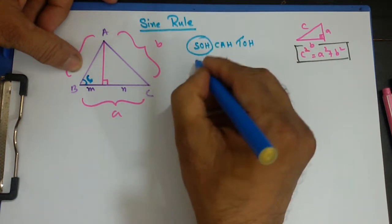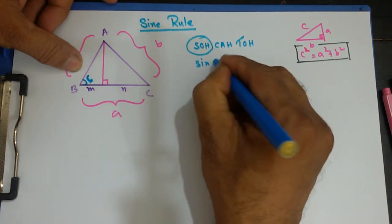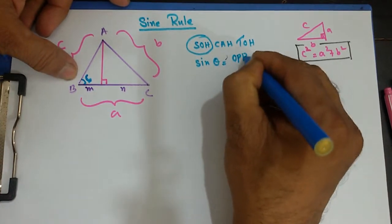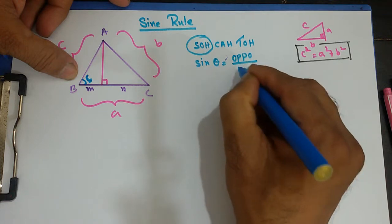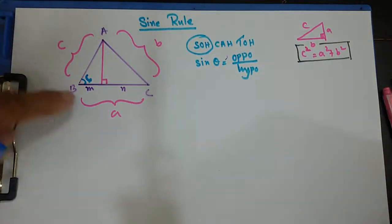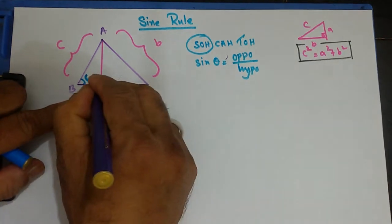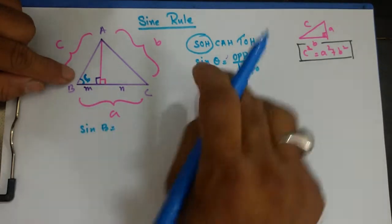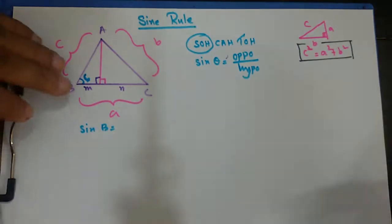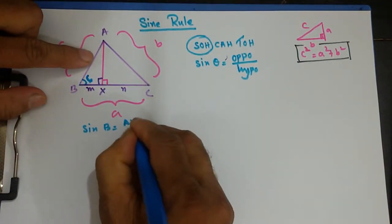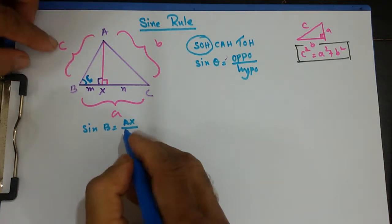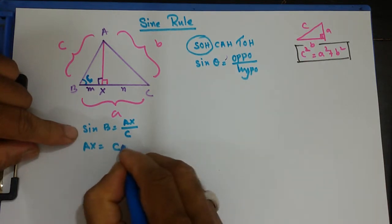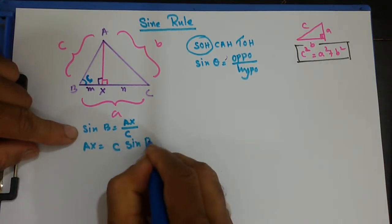I'm going to use SOH here. SOH means sine of any angle — in this case sine B — equals opposite over hypotenuse. The hypotenuse is the side opposite the right-angle. So sine B equals opposite over hypotenuse. Let me name the perpendicular height AX. That gives us sine B equals AX over AB, and AB is nothing but small c. So AX equals c·sine B — that's equation one.